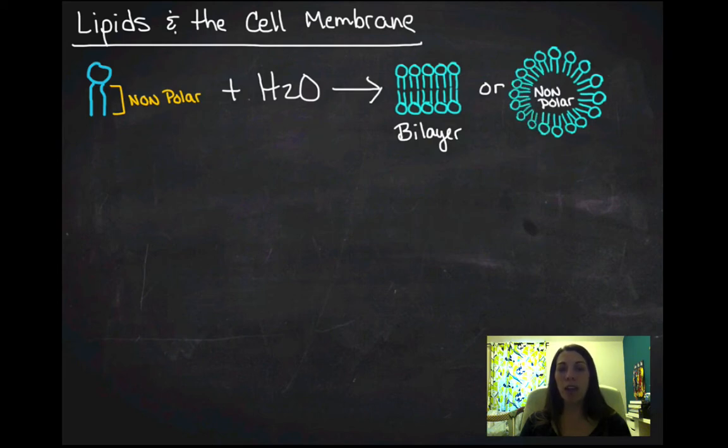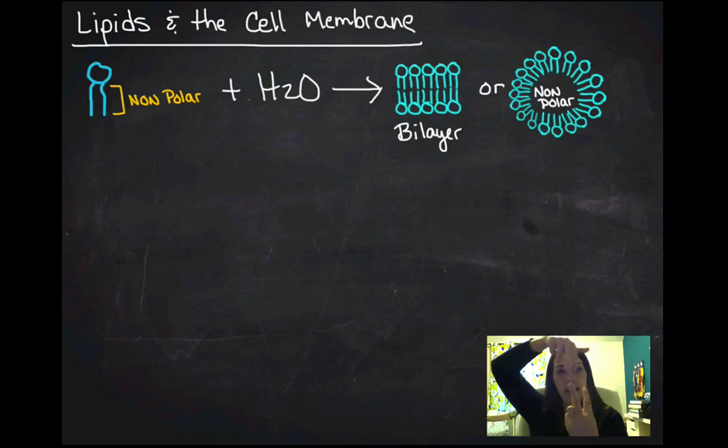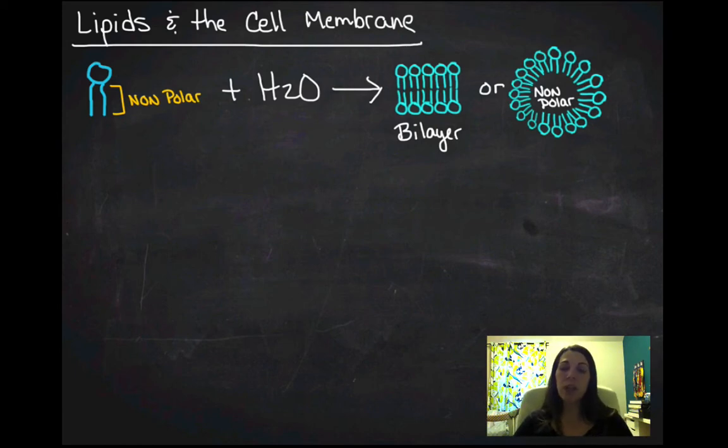So what they do is they arrange themselves like this ball is doing right here. So all of the nonpolar fatty acid tails are facing other nonpolar fatty acid tails. Now it can do this in one of two ways. It can do it by forming a bilayer, which is going to go all the way around the cell. So it would be like a two layer fatty acid tail, fatty acid tail, right? And that goes all the way around the cell or they can actually just form a little circle. So we use the bilayer method. That's our cell membrane. It's made of phospholipids.